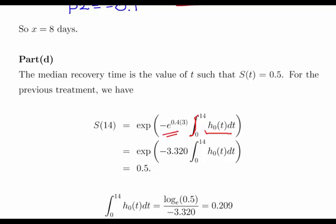So the survival function S(14) equals 0.5. Half the cows should have recovered by then for cows who start on the old treatment after waiting 3 days. This is the exponent of minus the integral of what we had before, with the constant taken out. We want to isolate the definite integral up to 14 days.